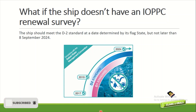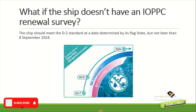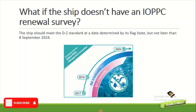What if the ship does not have an IOPPC renewal survey? Then the ship should meet the D2 standard at the date determined by its flag state, but not later than 8th September 2024.